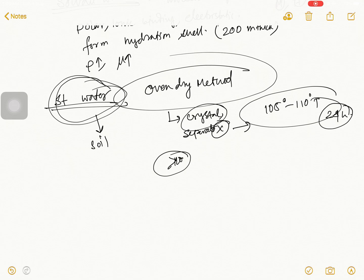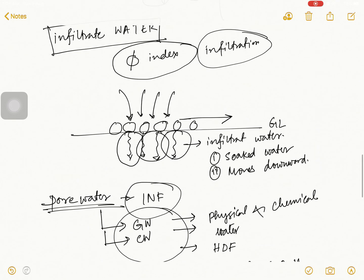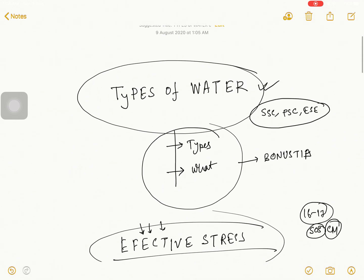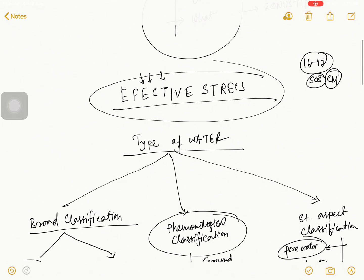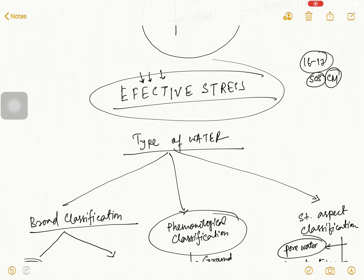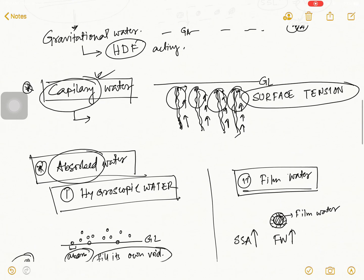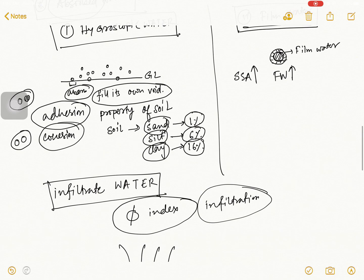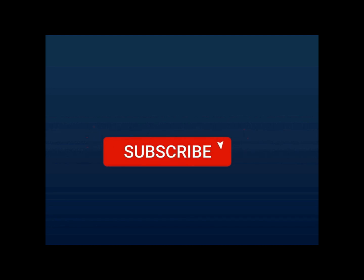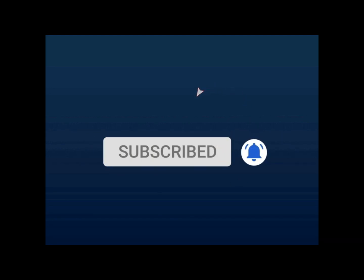Therefore this kind of water is part of the soil structure, which is why this type of water is known as structural water. So this is all about the types of water present in soil — the first part of effective stress. I covered three classifications and every type of water present in soil. If there is any doubt, comment in the comment section. If you learned something new, share and like the video. Subscribe my channel and press the bell icon for never missing an update — I am coming with this type of video almost every day. Thank you for watching. More knowledge, more opportunity.